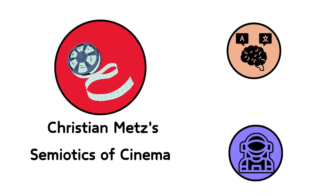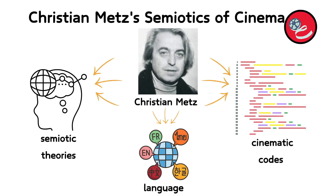Christian Metz's Semiotics of Cinema. Christian Metz, a French film theorist, applied semiotic theories to the realm of cinema, exploring how films communicate meaning through a complex interplay of visual and auditory signs. Metz's work is groundbreaking in that it treats films as a language — a system of signs that viewers learn to read. According to Metz, a film's narrative is constructed much like a language, using cinematic codes that are culturally learned and understood.